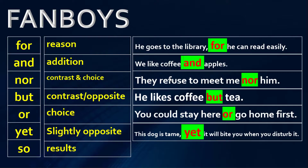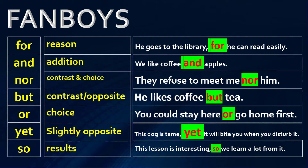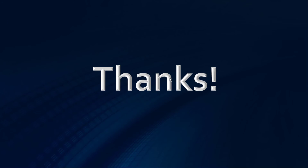'Yet' is used to talk about something slightly different or opposite: 'The dog is tame, yet it will bite you when you disturb it,' meaning the dog is generally good but will bite you if disturbed. And 'so' is used to talk about results: 'This lesson is interesting, so we learn a lot from it.' This is how we use FANBOYS. We are going to study more about conjunctions. Thank you very much for listening.